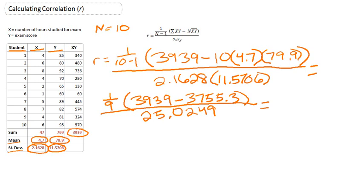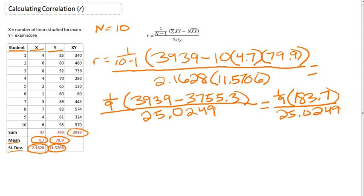So now we just need one more thing within parentheses that we need to simplify in the numerator. So we still have 1 over 9, and that will be multiplied by the difference of 3939 and 3755.3. So if we subtract those two numbers, we get 183.7. And then that still is over the 25.0249. So we're getting closer.